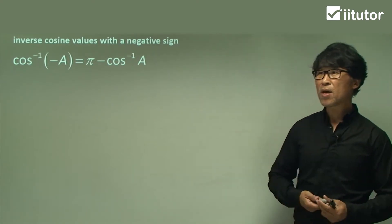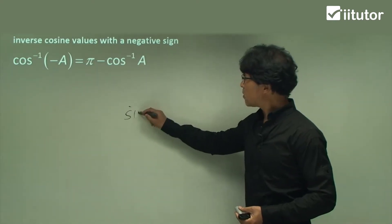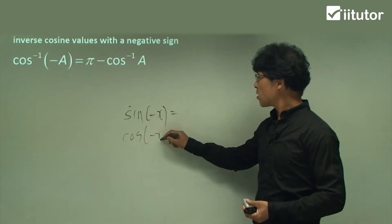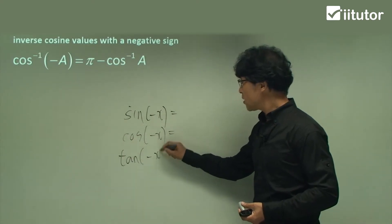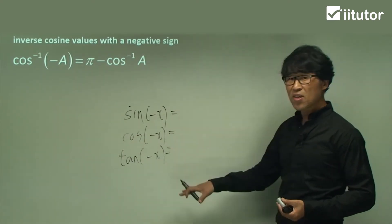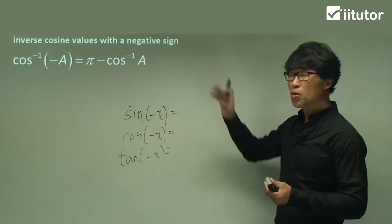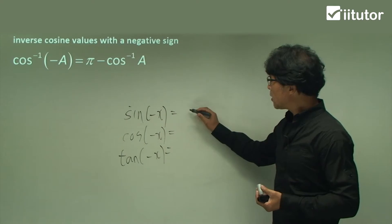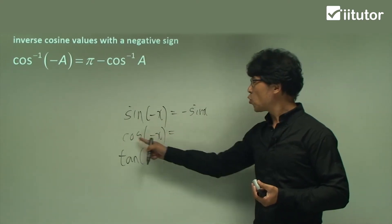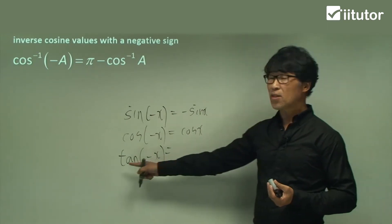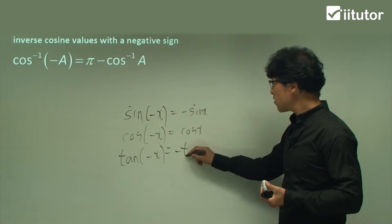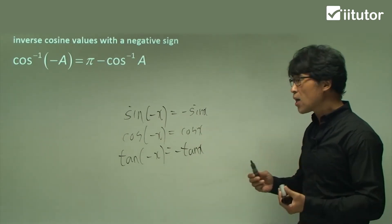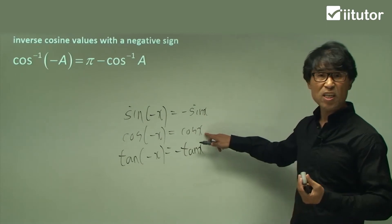For example, consider sin(-θ), cos(-θ), and tan(-θ). These are not inverse functions. However, we need to review before we go through the real negative value related inverse cosine function. So: sin(-θ) equals negative sin(θ), cos(-θ) equals positive cos(θ), and tan(-θ) equals negative tan(θ). The reason is that sine and tangent functions are odd functions, while cosine is an even function.